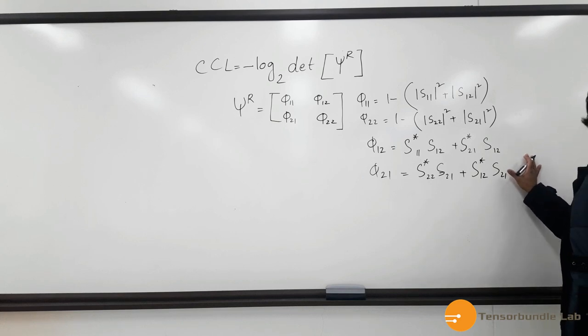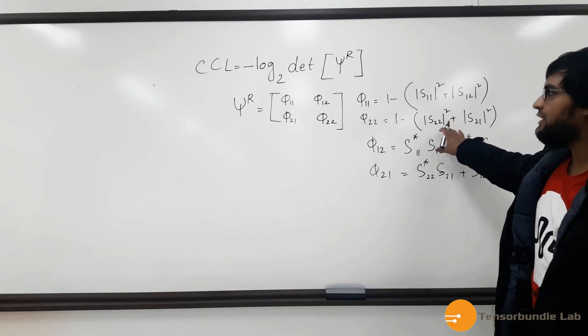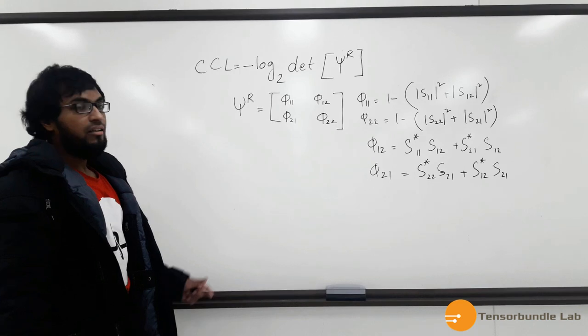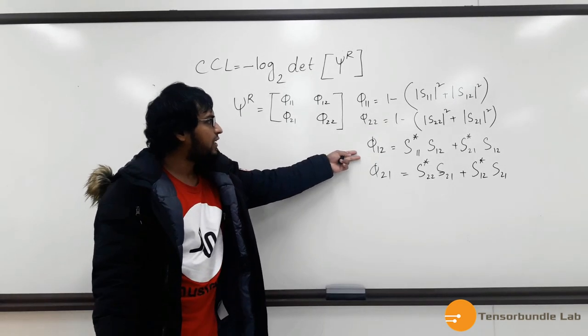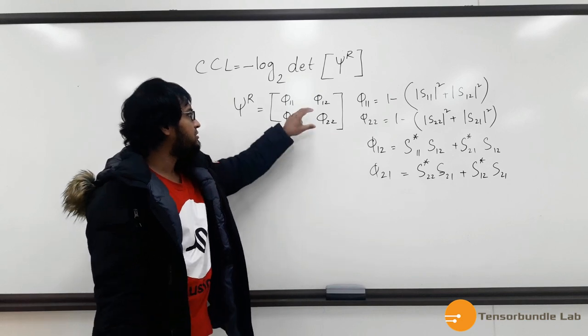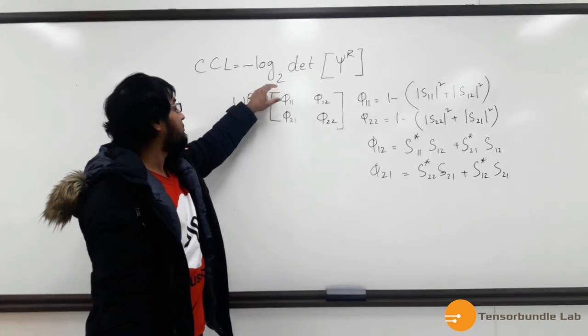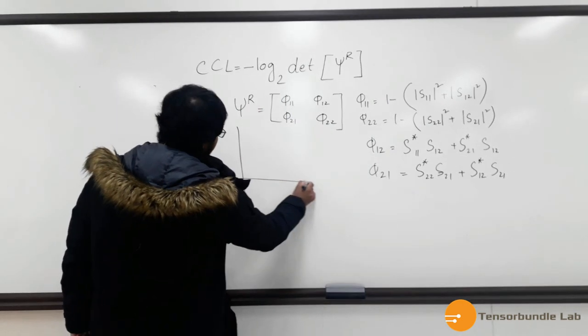So that is how we define the four elements in terms of these S-parameters. So whenever we measure an antenna, it will give us the S-parameter data, and we can directly calculate the CCL from this equation. And in MATLAB, you can plot it.